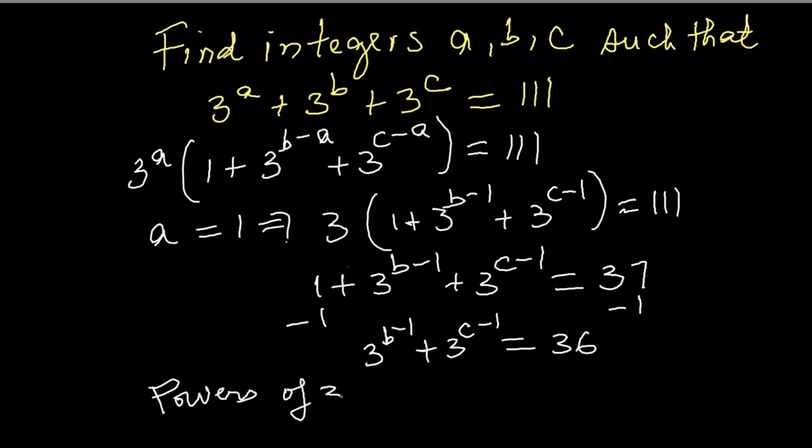The familiar powers of 3 are 3 squared equals 9, 3 cubed equals 27, and 9 plus 27 equals 36.